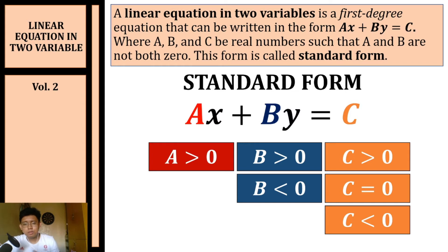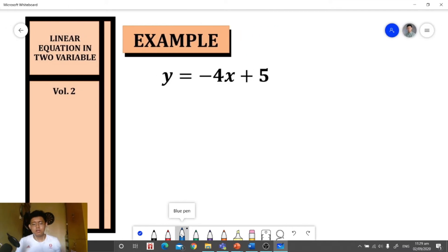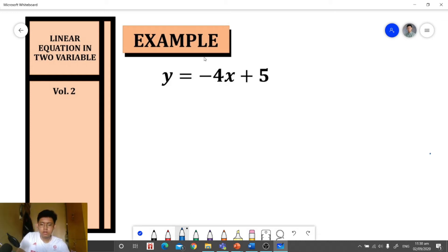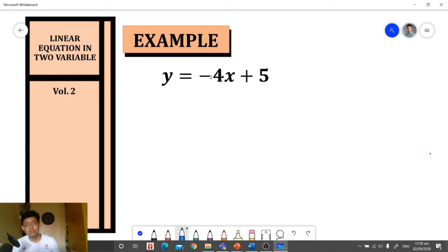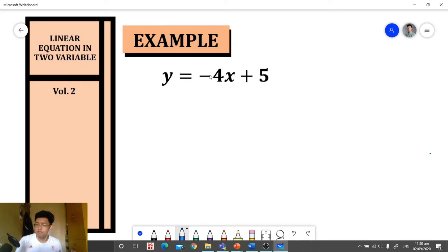Let's have some examples writing equations in standard form. For our first example, we are given an equation and we need to rewrite it in standard form. The first step is to place all the variable terms on the left side and all the constant terms on the right side, applying the addition or subtraction property of equality.